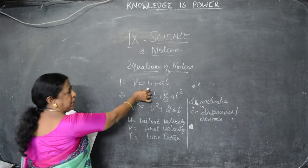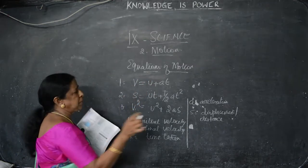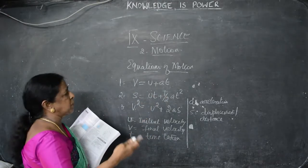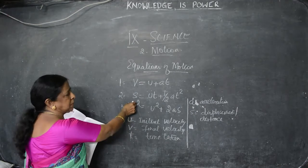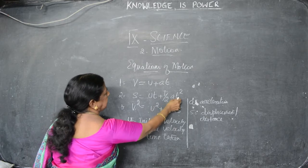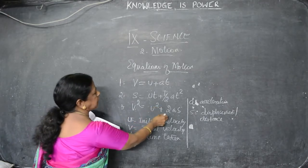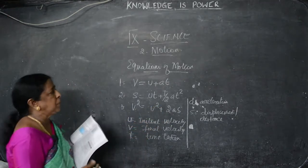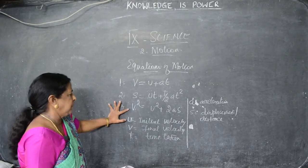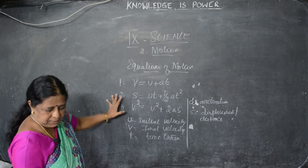Whatever the object may be, it starts with a starting speed known as u, that is initial velocity. It takes a certain time t. A is acceleration - that is, the increase in speed is known as acceleration. S is displacement. The second equation is s = ut + half at squared. T squared means time doubled. And the third equation is v squared = u squared + 2as. By using these formulas we can find out velocity, displacement, and acceleration. These are the 3 equations.